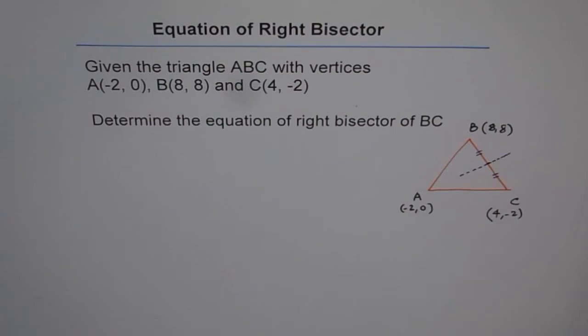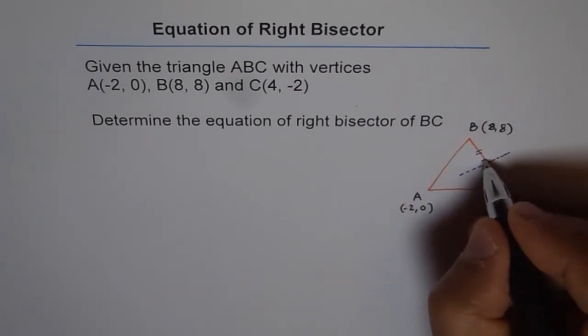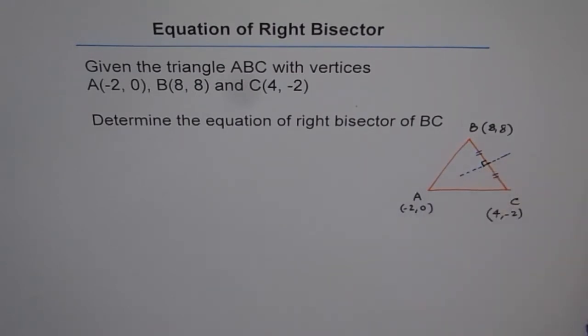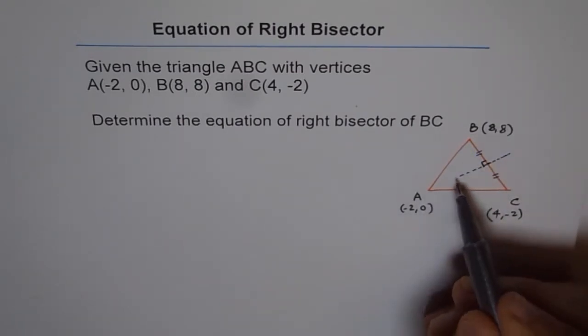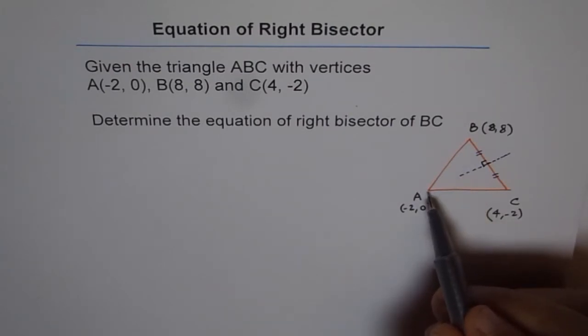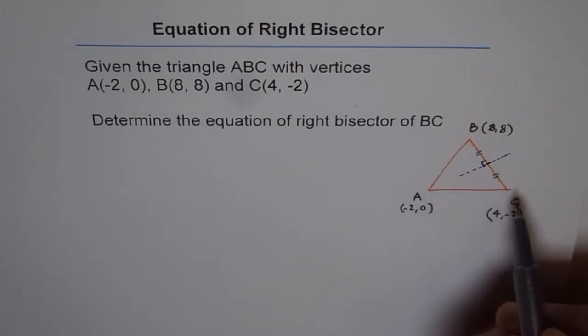So that is how the line is going to be. Perpendicular means this angle is 90 degrees. Now it seems as if this will go through A, but no, it may or may not. So don't worry about point A in this case. We are only concerned with the line BC, its midpoint and the slope. So these are the three things which we need to consider when we do right bisector of a line segment.